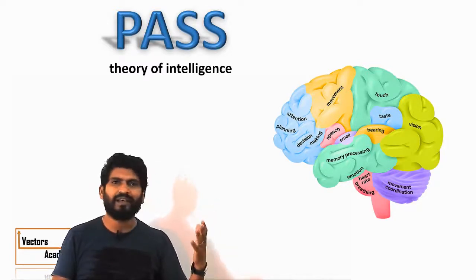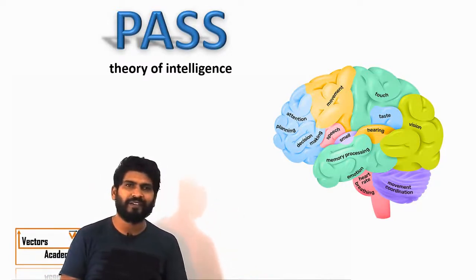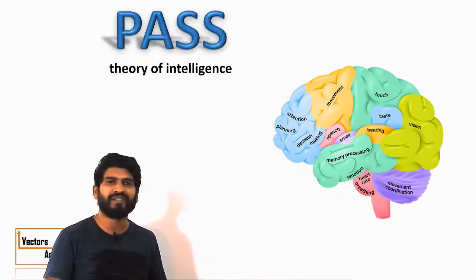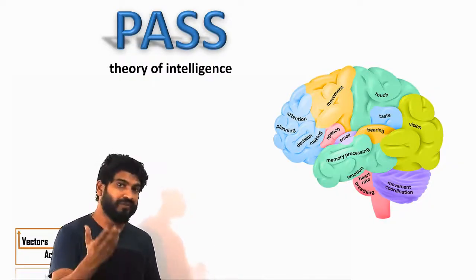For example, this understanding ability might be affected. You will be able to read and write properly but you will not be able to understand what is written. So different parts of a brain perform different functions.